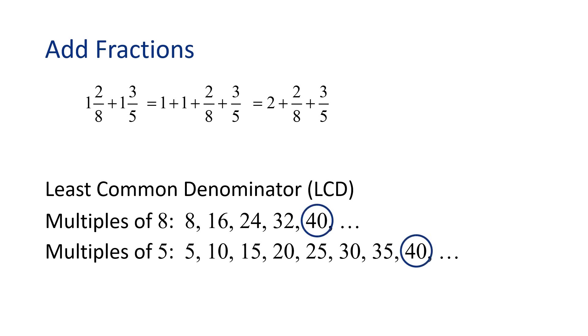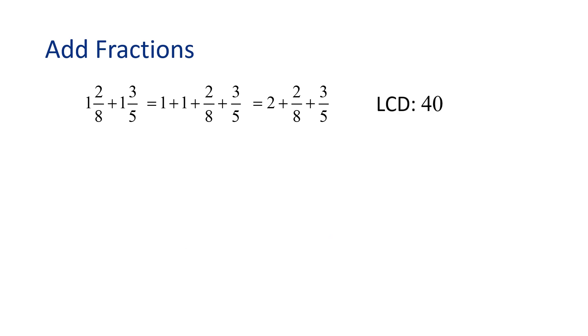It looks like 40 is the least common multiple of 8 and 5. Also, do you notice that 8 times 5 is 40? Cool! Sometimes the LCD is the product of the denominators themselves, like in this case.